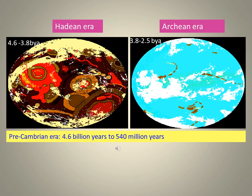In the Hadean era, the world never had any living organisms — it was a hot ball of mass. In the Archean era, from 3.8 to 2.5 billion years ago, the Earth slowly started to cool. As a result, you could see blue-colored oceans beginning to form.